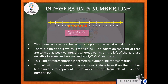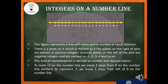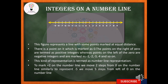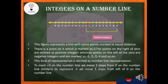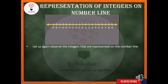To mark plus 2 on a number line, we move 2 steps from 0 towards the right side. Similarly, if we want to represent minus 5, we will be moving 5 steps to the left of 0 on the number line. These are some examples, and we will understand this concept more clearly in the following slides.